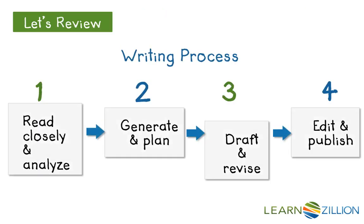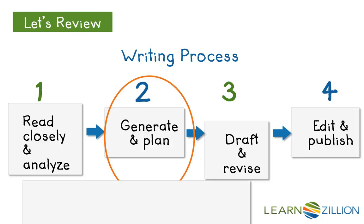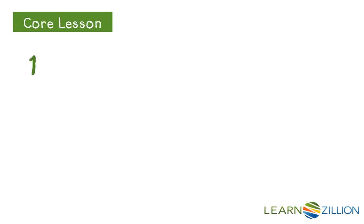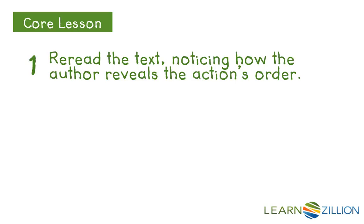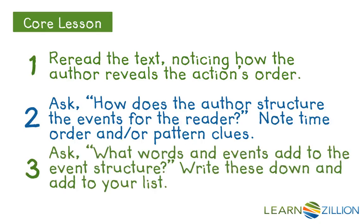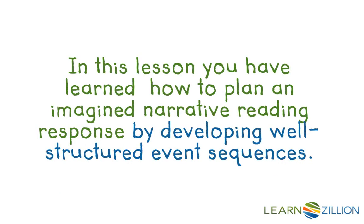In our writing process, still in the generating and planning stage, we're putting together how we're going to structure our events so that our poem makes sense to the reader — writing our response to 'The Wind's Visit' where the narrator is now the wind. In this lesson, we reread the text noticing how the author reveals the action's order, asked how the author structures events for the reader and noted time order and pattern clues, and looked for words and events that add to the event structure. You have learned how to plan an imagined narrative reading response by developing well-structured event sequences.